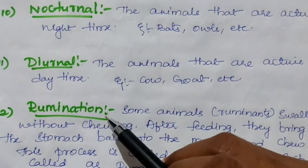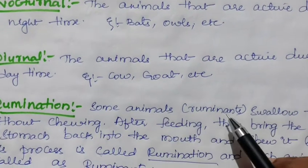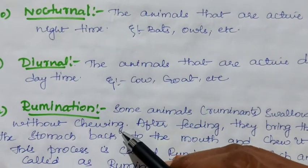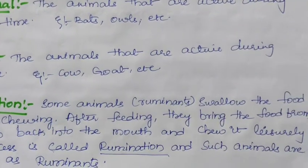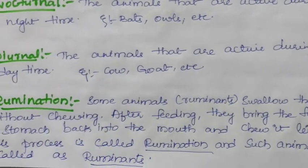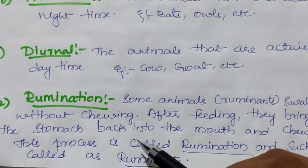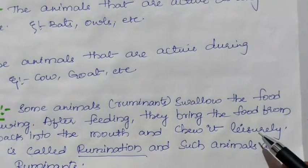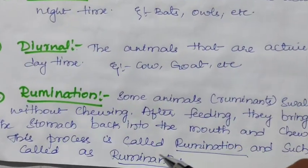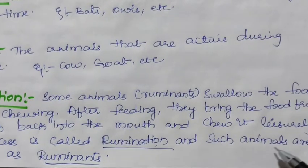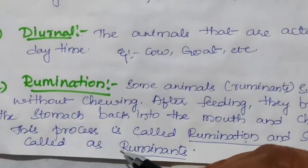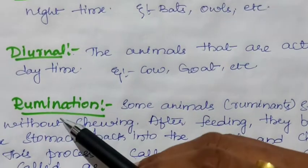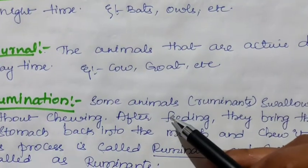Rumination: some animals, called ruminants, swallow food without chewing. After feeding, they bring the food from the stomach back into the mouth and chew it leisurely. This process is called rumination, and such animals are called ruminants.